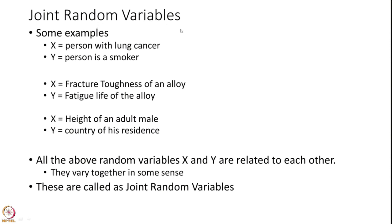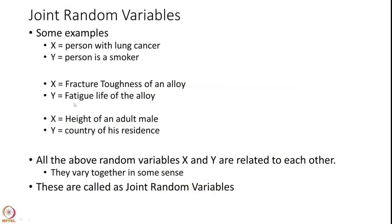Joint random variables occur very naturally in our day-to-day life. For example, lung cancer and smoking are correlated events that vary together. In materials science and metallurgy, the fracture toughness of an alloy and the fatigue life of an alloy are also closely related and vary together. Similarly, the height of an adult male or female and their country of residence also have an effect. All of these random variables, though different, vary together in some sense, and such variables are called joint random variables.